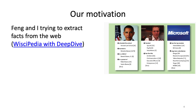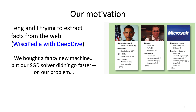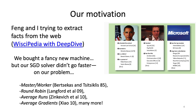Our application was building a system to extract triples from the web. We bought a big machine to speed up SGD on our model. We were very excited, but when we fired up the machine, our model didn't go any faster. We went and implemented everything we could find in the literature. We scoured classical textbooks, yet nothing seemed to move the needle for our problem.